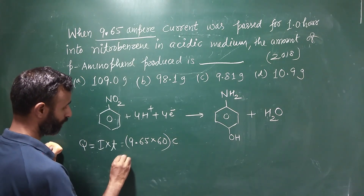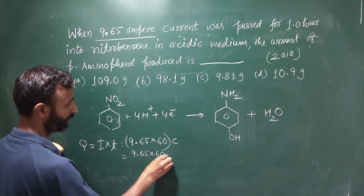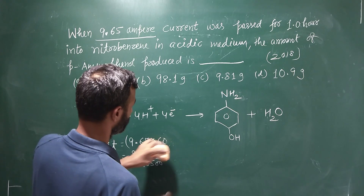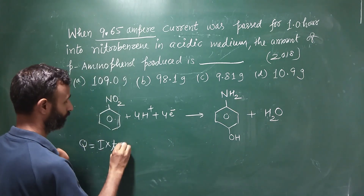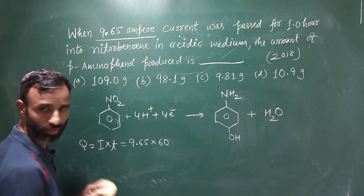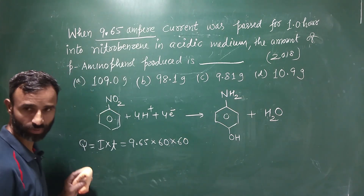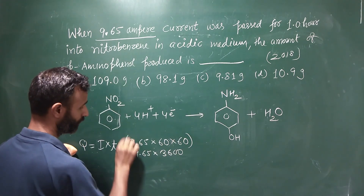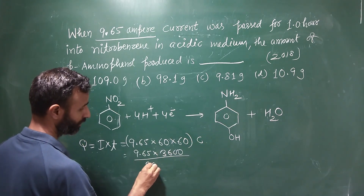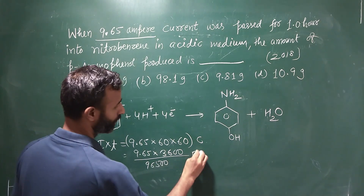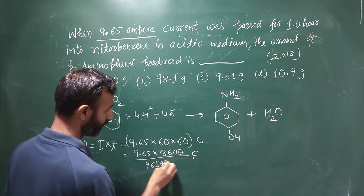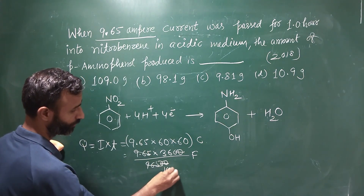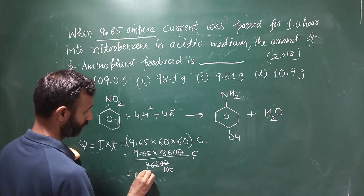Now converting to faradays: 9.65 × 3600 divided by 96500. The 9.65 cancels, giving us 3600 divided by 96500, which comes out to 0.36 faraday. This much electricity has been passed.